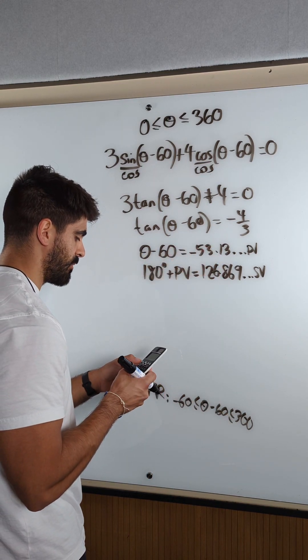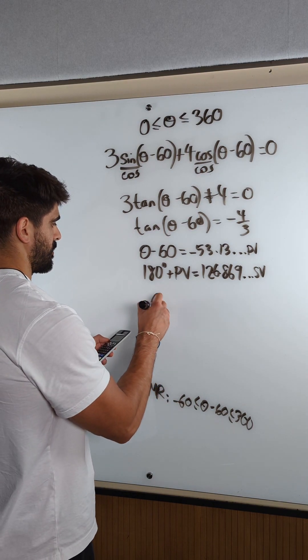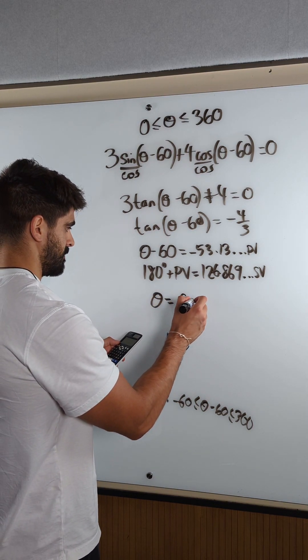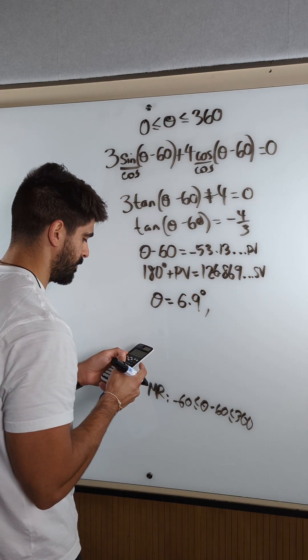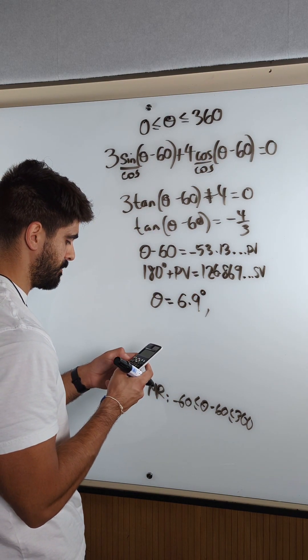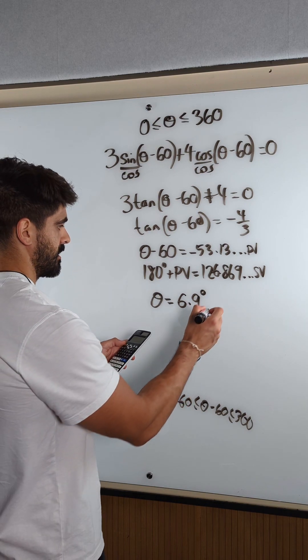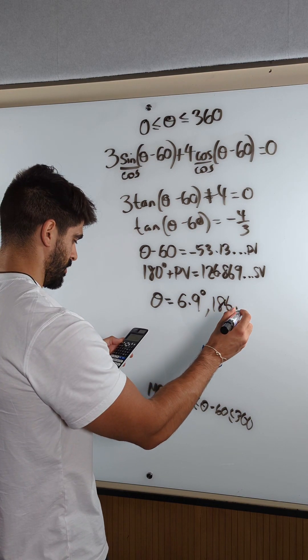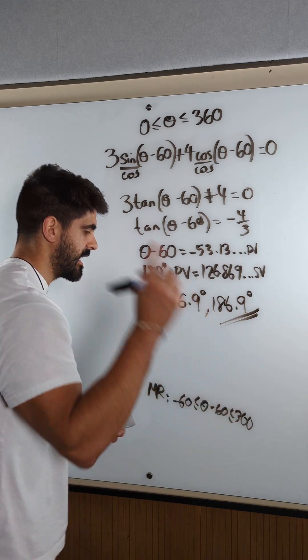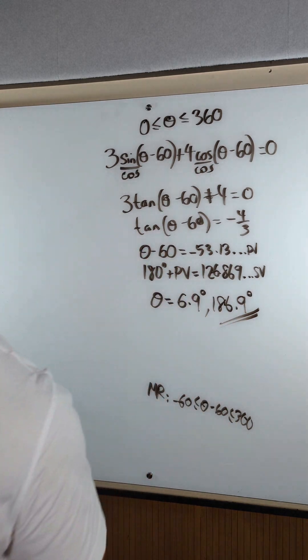We're just going to add 60 to both of them to get our final answer. So theta is 6.9 degrees. I'm just going to do one decimal place. Then I'm going to change it to b plus 60. Gives you 186.9 degrees. And that is that mate. Sweet. Peace.